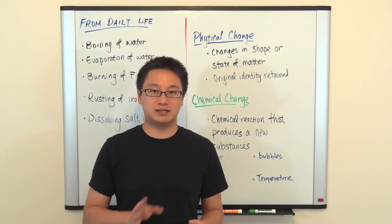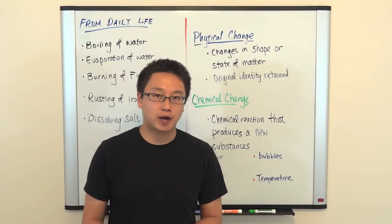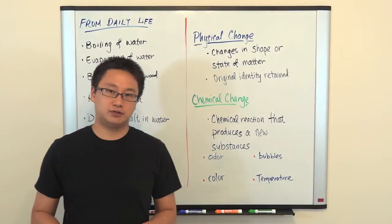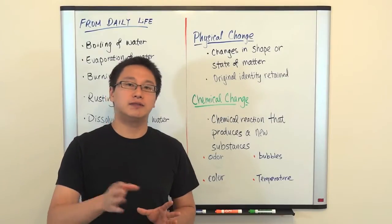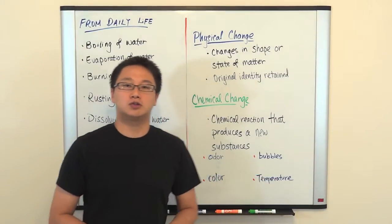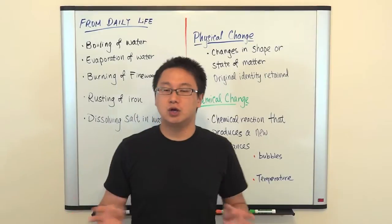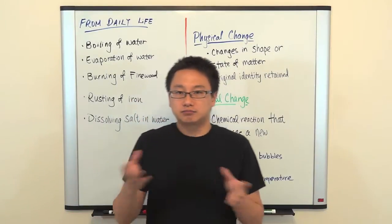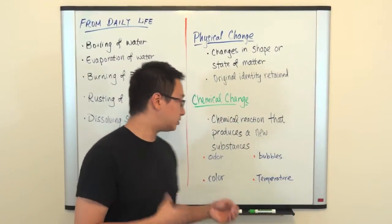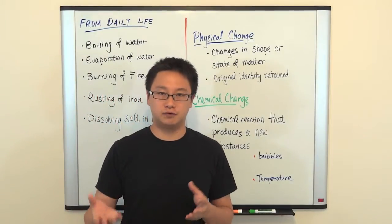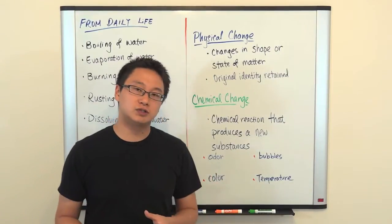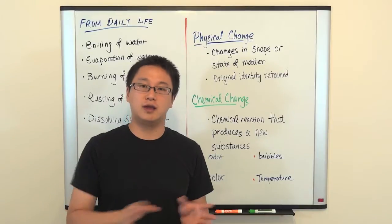What can we use as evidence to tell that there's a chemical change going on? There are four bullet points: odor, color, bubbles, and temperature. These are hints or evidence to help you tell that there's a chemical change. It's easier to identify a chemical change because you can make use of your senses to tell if a chemical reaction is happening right away.